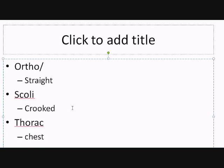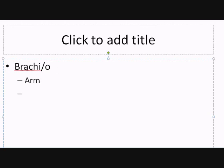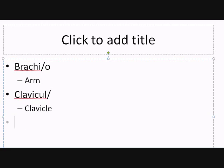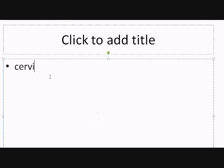Moving on to more skeletal terms: 'thorax' or 'thoraco-' refers to the chest. 'Brachy-' refers to the arm — we've already mentioned this with terms like brachial and antecubital. 'Clavicle' — or 'clavicul-' — is a very sensible medical term referring to the collarbone. 'Cranio-' obviously refers to the skull.